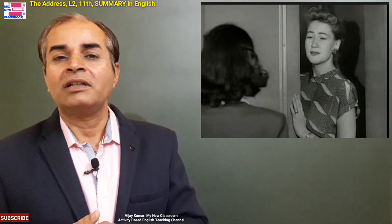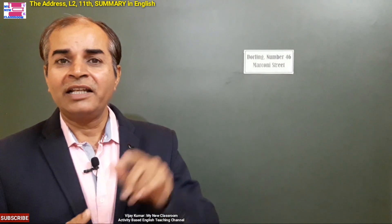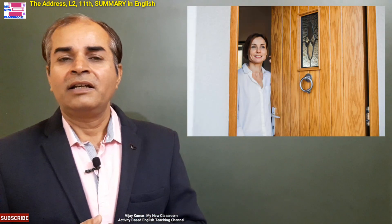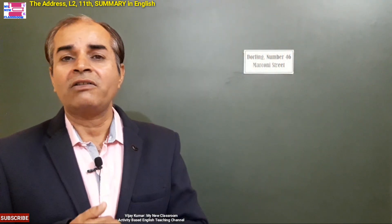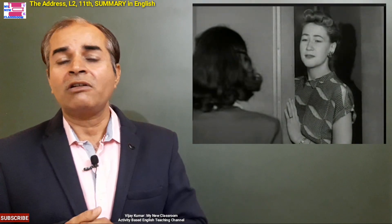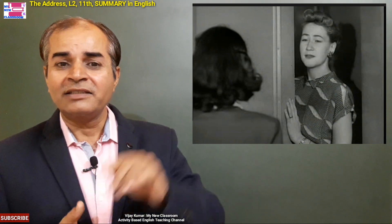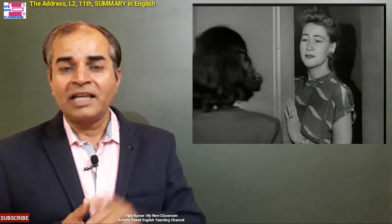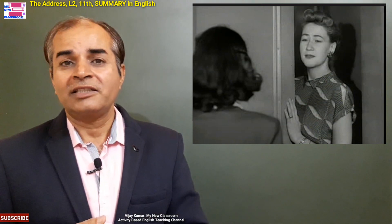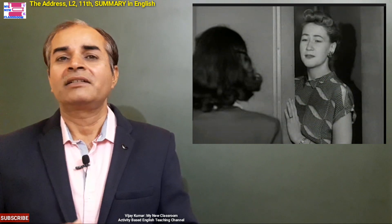That woman also noticed that the narrator was looking at the cardigan. So Mrs. Darling hid herself behind the door so that she would not be recognized as the same lady. Later the writer also recognizes that yes, she is at the right address, and asks that lady, 'You knew my mother.' That lady asks, 'Have you come back?' The author replies, 'No, no one has come back — it's only me.'